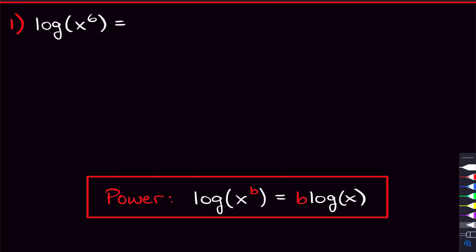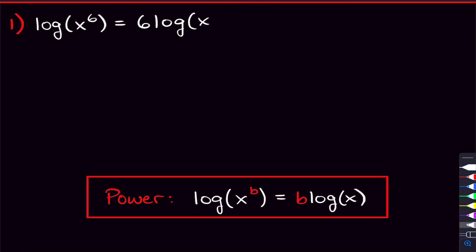We're going to start with the log of x to the 6th. You can see that the argument has a 6 in the power, and the power property says that we can bring that power out front. So that 6 we're going to write out front, and now we just have x left. The log of x to the 6 is equal to 6 times log of x. Our first problem is done.